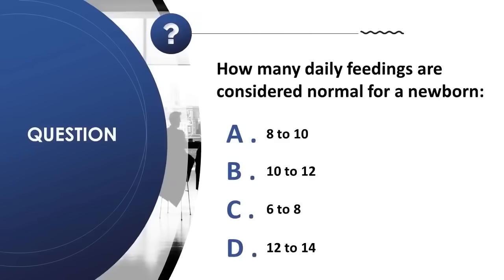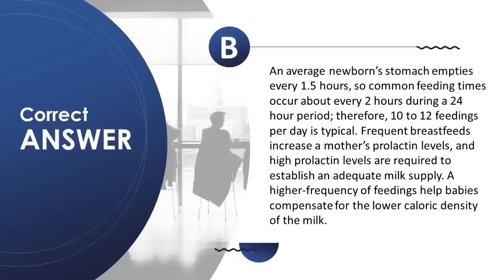Question 34: How many daily feedings are considered normal for a newborn? A) 8 to 10; B) 10 to 12; C) 6 to 8; D) 12 to 14. Correct answer is B. An average newborn's stomach empties every 1.5 hours, so feedings occur about every 2 hours; 10 to 12 feedings per day is typical. Frequent breastfeeds increase prolactin levels, which are required for adequate milk supply.